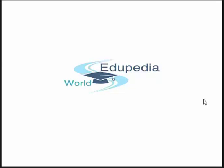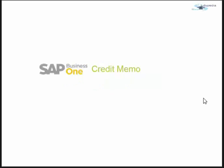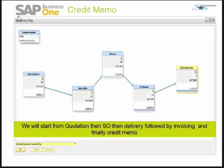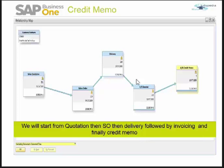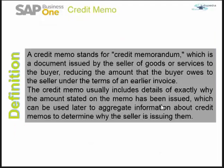Hi guys, thank you for watching Edupedia World videos. We'll see about SAP Business One credit memo. We'll try to build this relationship map during this video. We will take a business partner and start from sales quotation, then sales order, then delivery, AR invoice, and the credit memo. After delivery there can be a return, or there can be an AR invoice, but in this video we'll learn about credit memo, and that's why we require an AR invoice here.